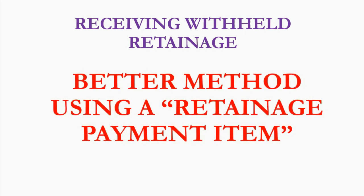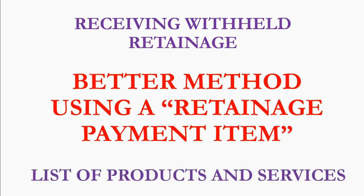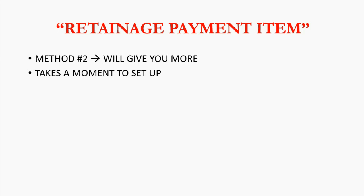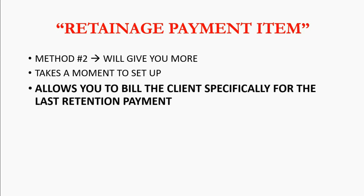If you use this better method for receiving withheld retainage, then you must make a retainage payment item and put that item on the list of products and services. The retainage payment item is part of method number two and it gives you more of what you need as a QuickBooks Online user. It only takes a moment to set up and it allows you to bill the client specifically for the last retention payment and the total amount outstanding.